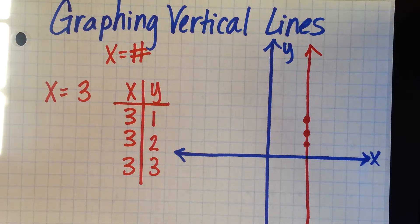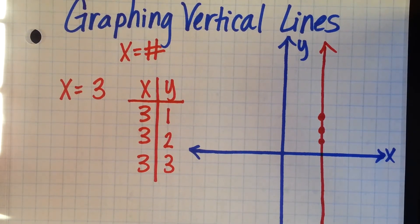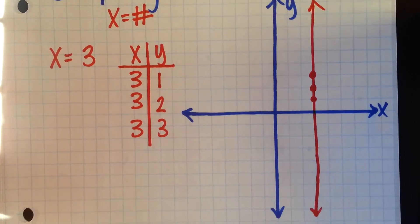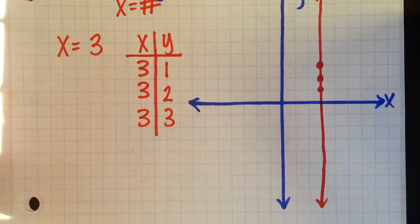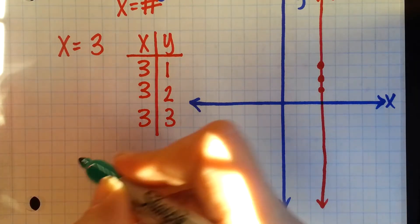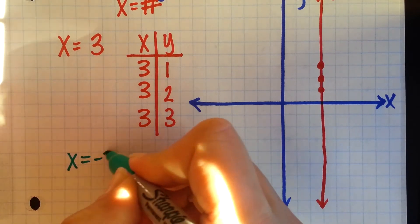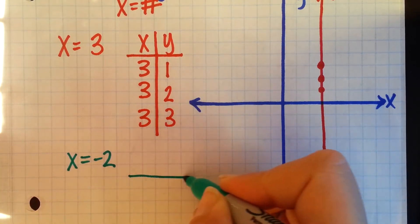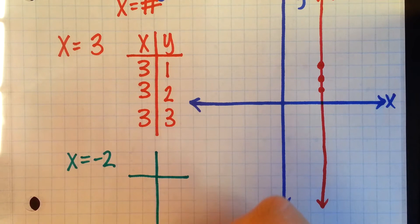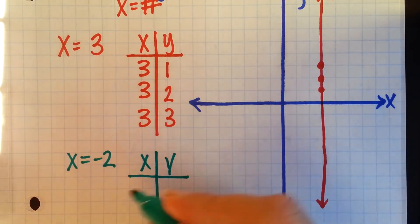Let's try another one, just for practice. Say this time we want to do x equals negative 2. That means no matter what y values we pick, our x is always going to be negative 2.